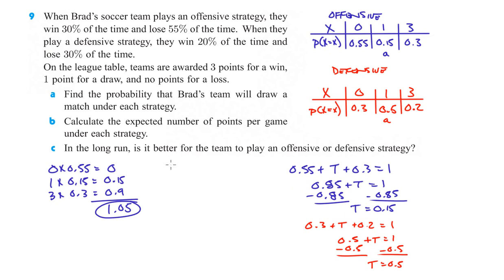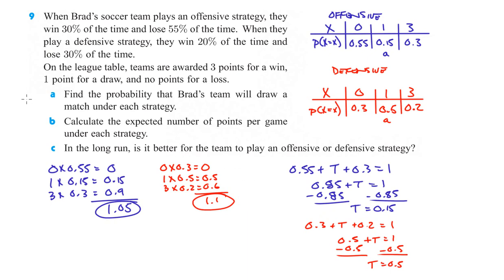Under the defensive strategy: 0 times 0.3 is 0, plus 1 times 0.5 is 0.5, plus 3 times 0.2 is 0.6. Adding those together gives 1.1. In the long run, it's better for the team to play a defensive strategy, because that gives the higher expected points.